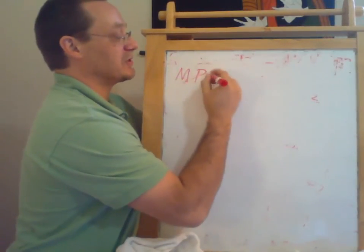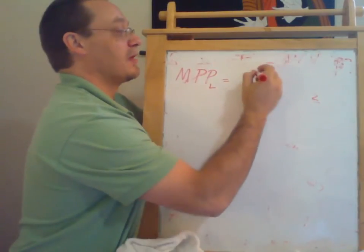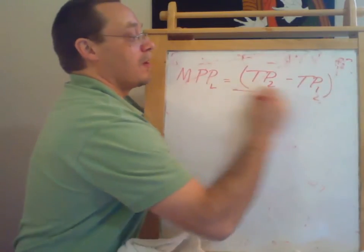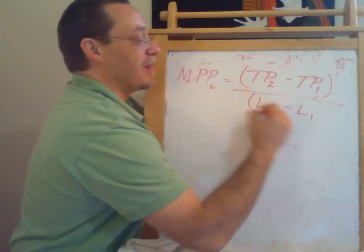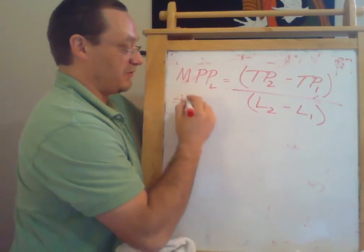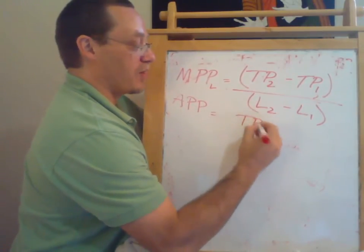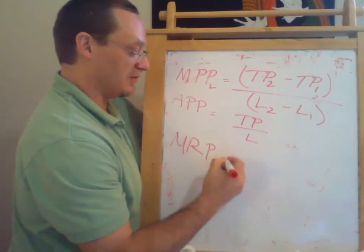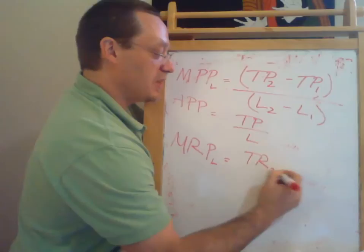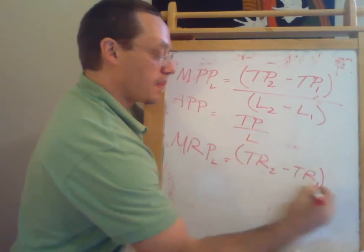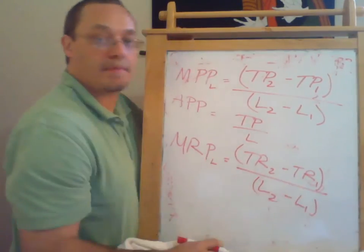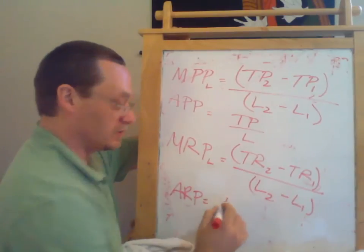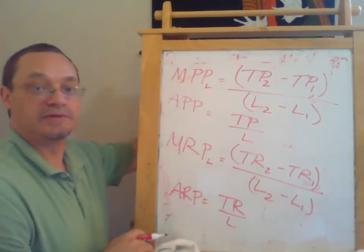Marginal physical product of labor is the change in total product over the change in the amount of labor we use. Marginal revenue product of labor equals the change in total revenue over the change in the amount of labor we use. And finally, average revenue product equals total revenue over the amount of labor we use. So those are the equations.